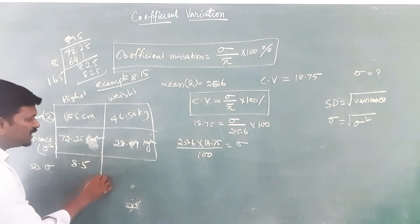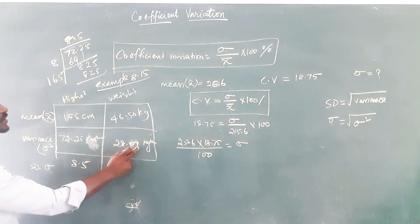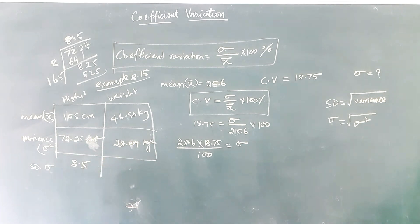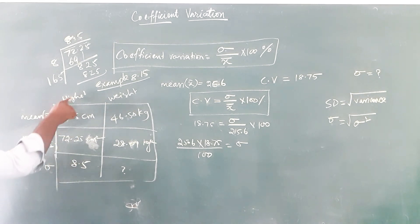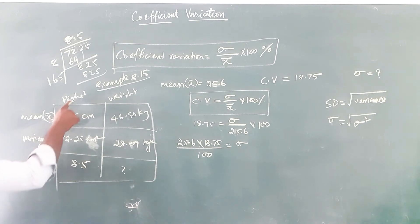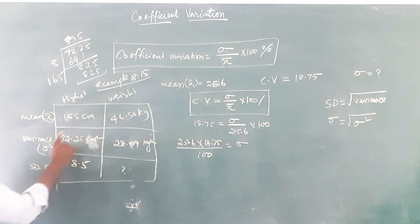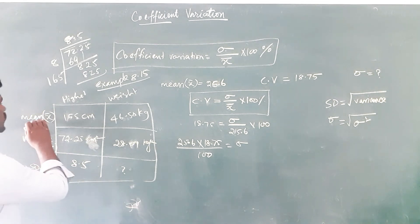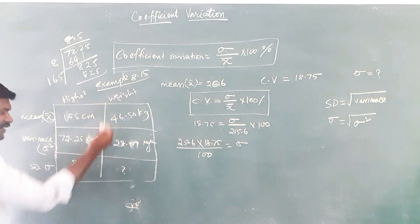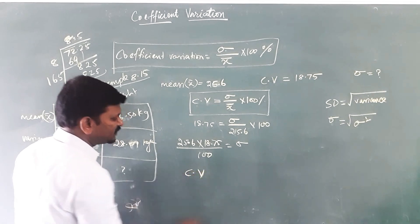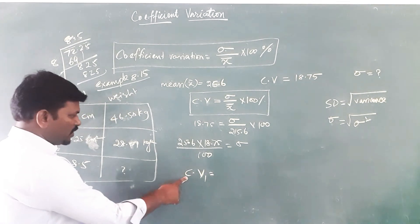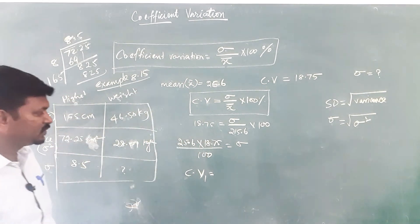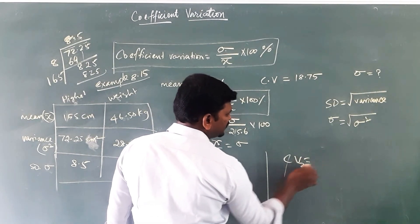Now we have the mean and standard deviation for both height and weight. Using the formula CV = sigma divided by x-bar into 100, substitute the values to find CV1 (coefficient of variation for height) and CV2 (coefficient of variation for weight).